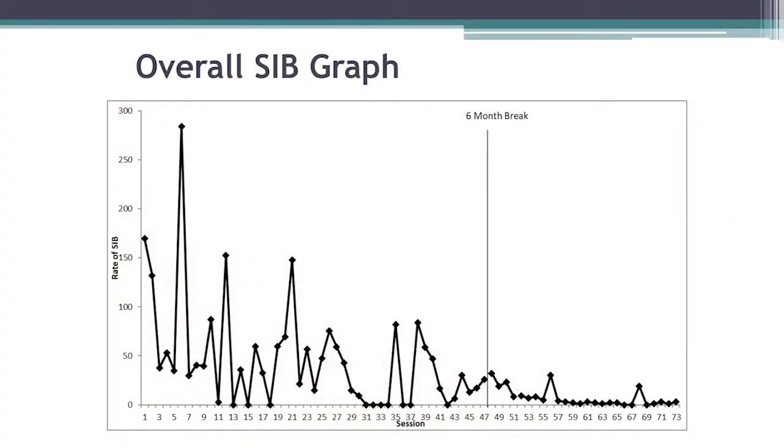As Ashley said, with Michael's graph — with the SIP — this really is striking with that six-month break. And this is completely attributable to parent training. When we do things out of context, generalization is just not going to naturally happen. But if you systematically train people across contexts to do the same thing you're doing, you can get interventions that maintain over time.